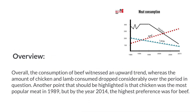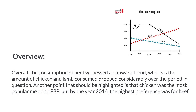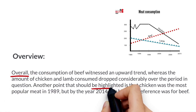Overall, the consumption of beef witnessed an upward trend, whereas the amount of chicken and lamb consumed dropped considerably over the period in question. Another point that should be highlighted is that chicken was the most popular meat in 1989, but by the year 2014 the highest preference was for beef. As you can see, when we write our overview we can use words and phrases such as 'overall,' 'what could be highlighted,' or 'underlined.'